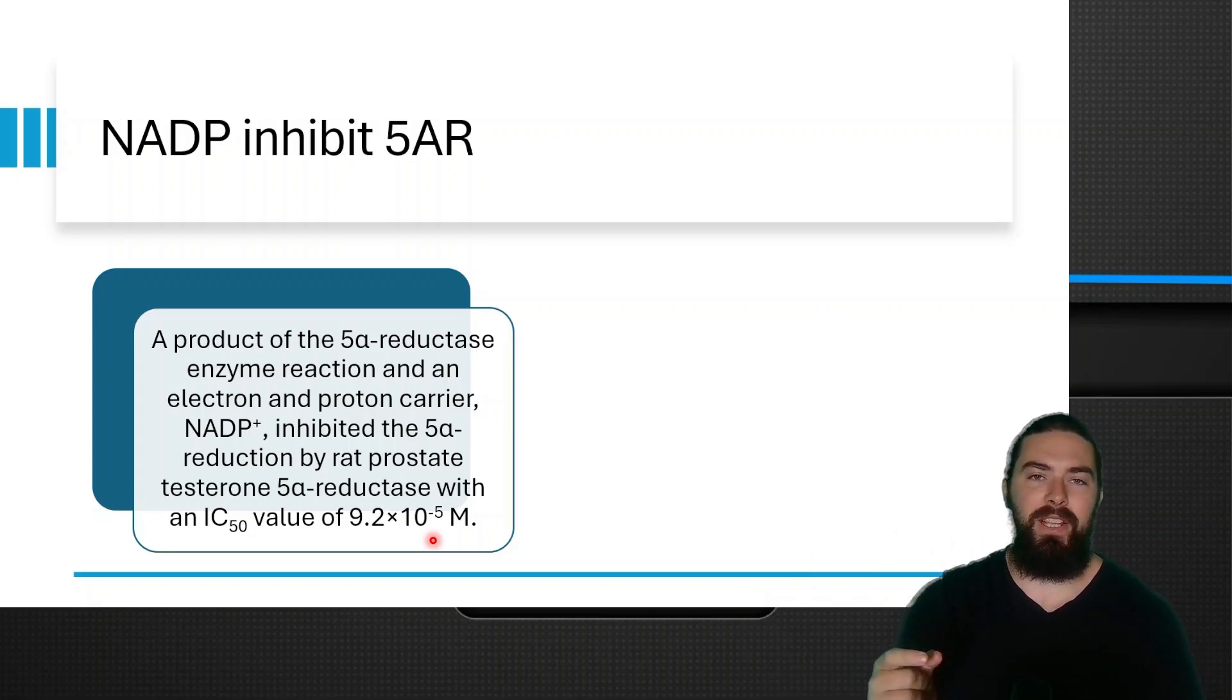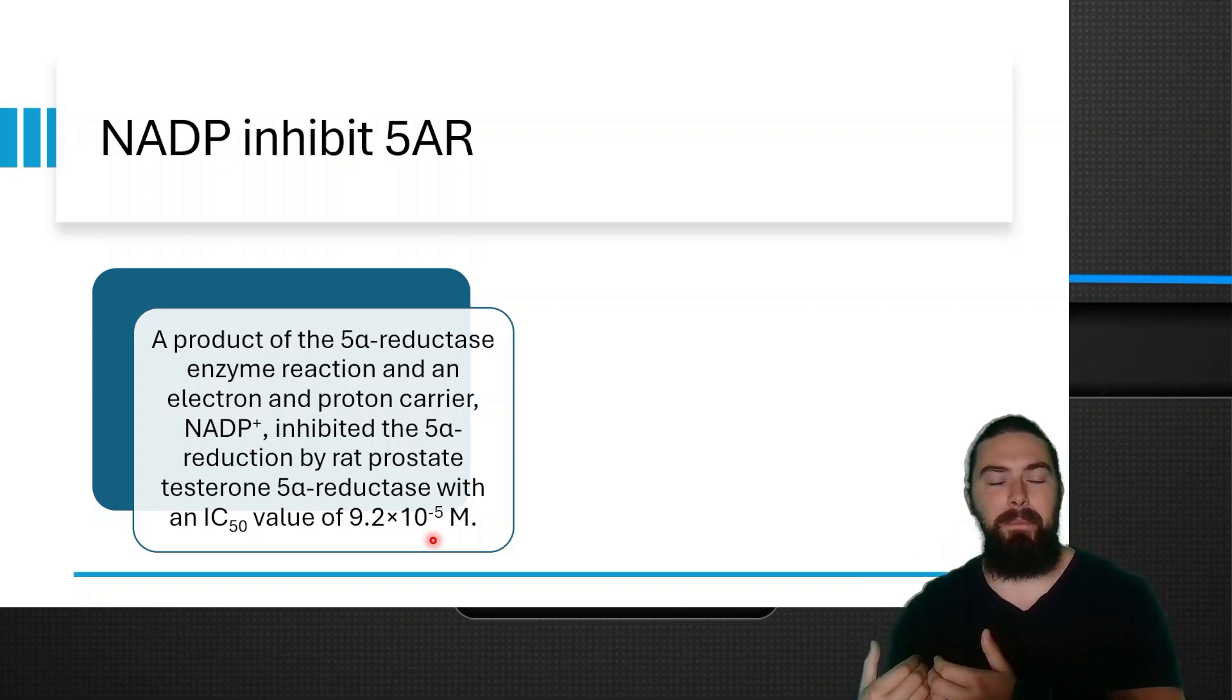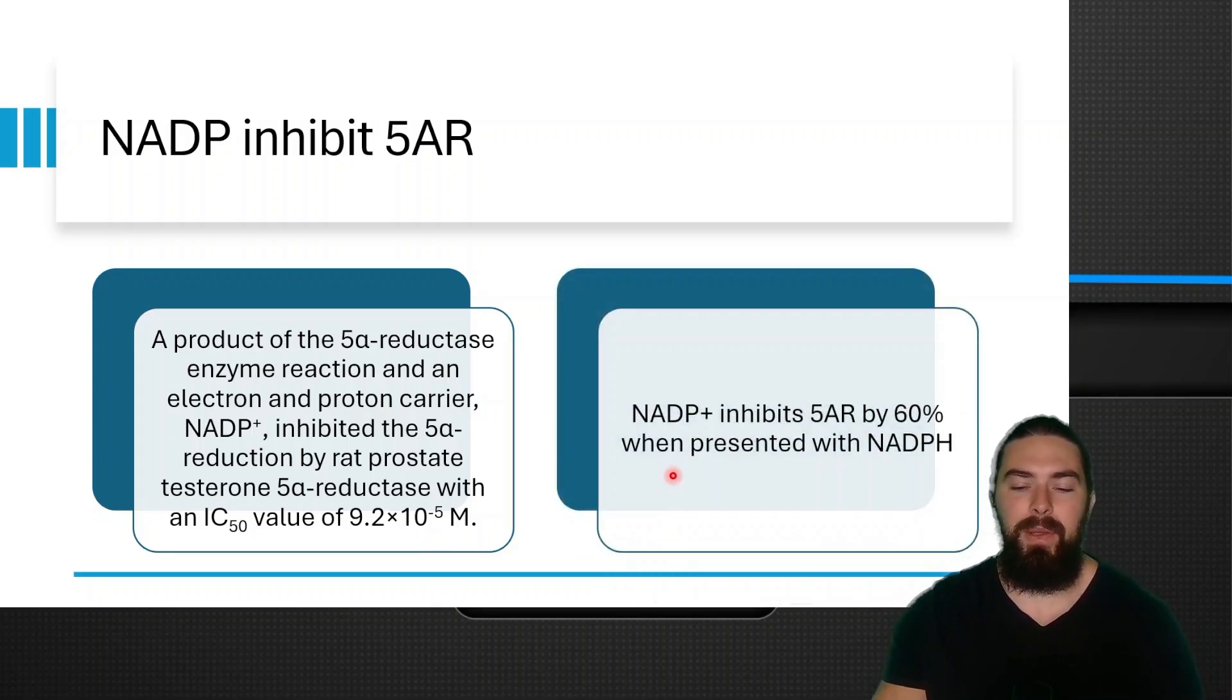So if you use an electron acceptor that is accepting electrons from NADPH, you're creating NADP, which is therefore going to inhibit 5-alpha reductase. So NADP+ inhibits 5-alpha reductase by 60% when presented with NADPH. This is just another finding from the study.